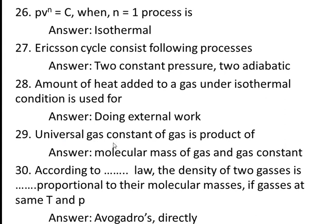Twenty-ninth question: the universal gas constant is a product of — answer: molecular mass of gas and the (characteristic) gas constant. So universal gas constant R_u = M × R, where R is the characteristic gas constant, R_u is the universal gas constant, and M is the molecular mass.